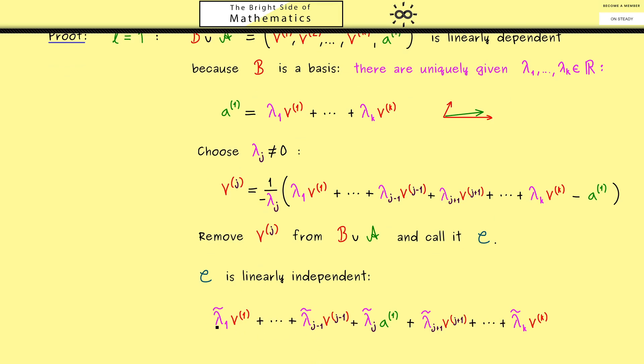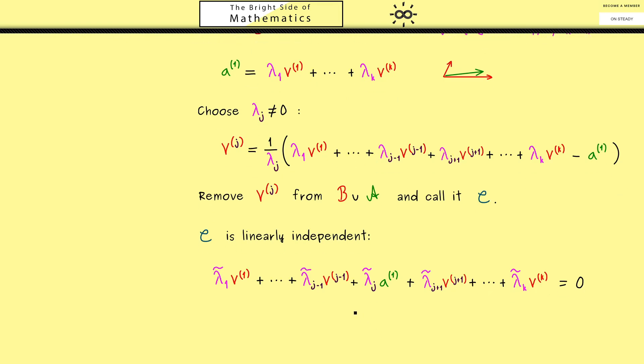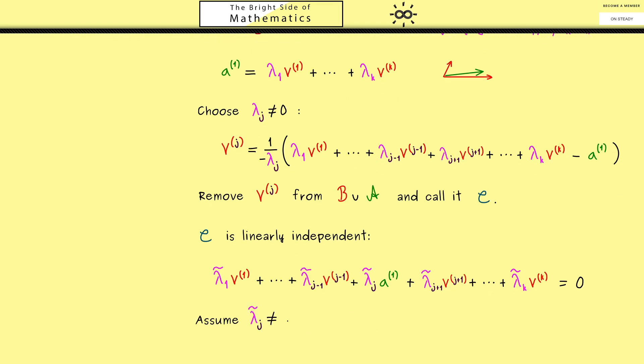For this, let's choose an arbitrary linear combination with all the vectors, with coefficients lambda tilde. Moreover, here you see, for convenience reasons, we have put the vector a^(1) at the position j. Okay, and now you know, for showing the linear independence, we want a linear combination for the 0 vector. Okay, then the first thing to note here is that this lambda_j tilde has to be 0. Because if it wasn't 0, we would be able to divide by it. Hence, we would conclude that we have a new linear combination for a^(1).